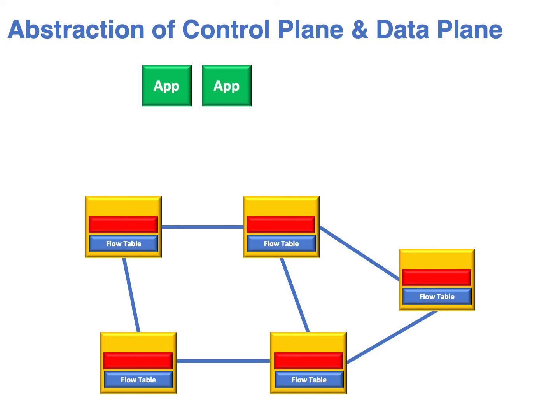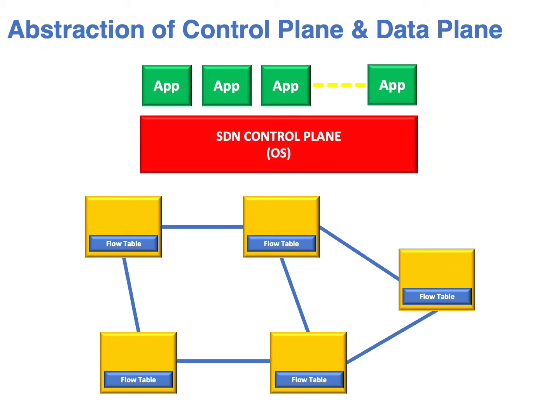We start off by taking out all of the applications and putting them into the central controller. The central controller will also have its own operating system — this is where the SDN control plane is going to reside. The controller will interface to each one of the switches or routers within the network using an OpenFlow interface.